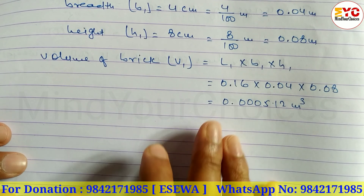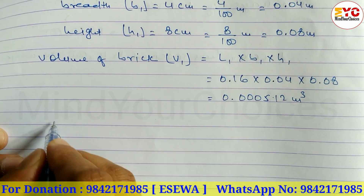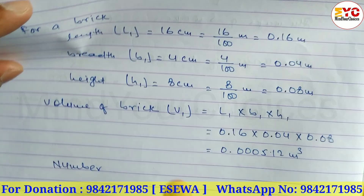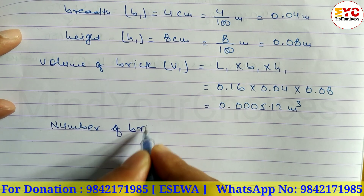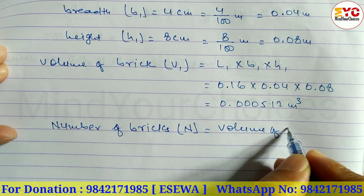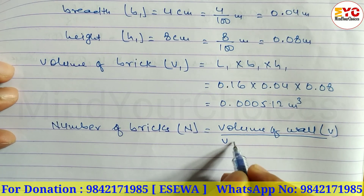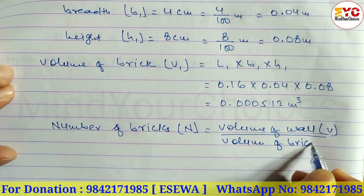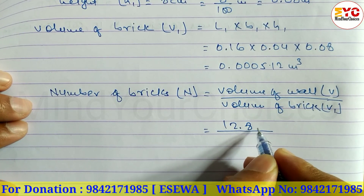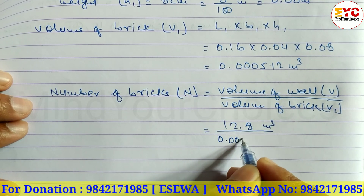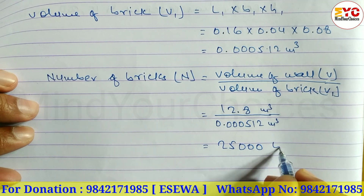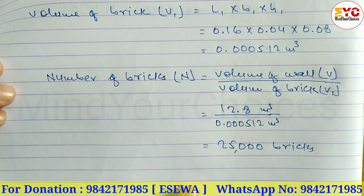Now we have to find the number of bricks. The formula for number of bricks is: N = volume of wall divided by volume of brick. So N = 12.8 divided by 0.000512, which gives us 25,000. Number of bricks is equal to 25,000.